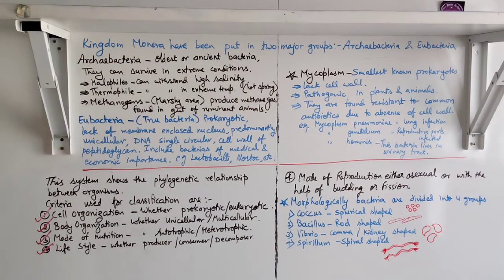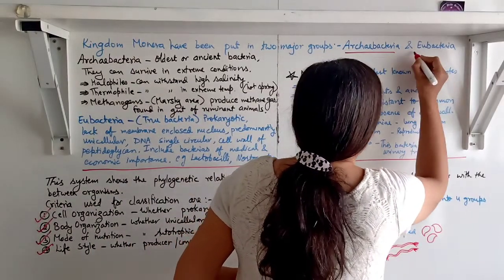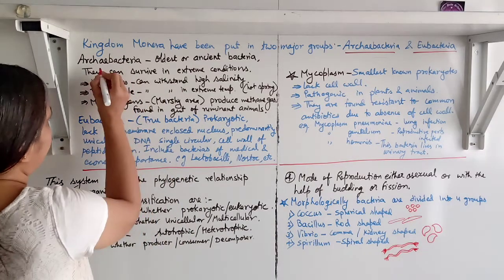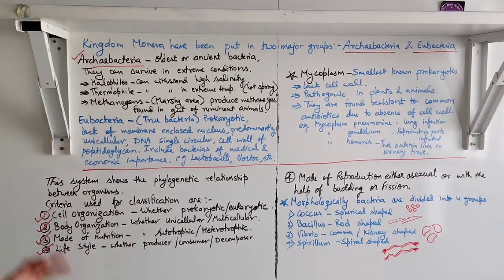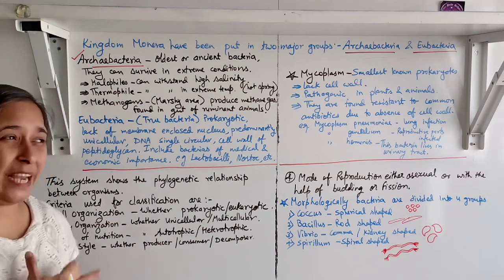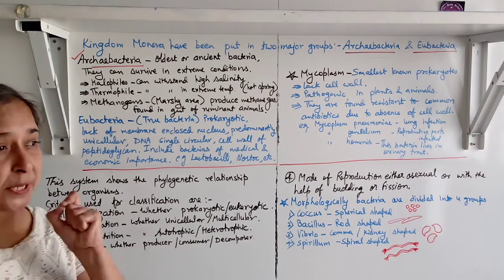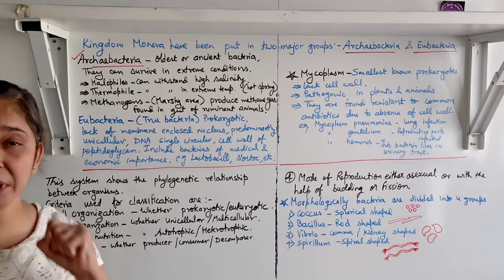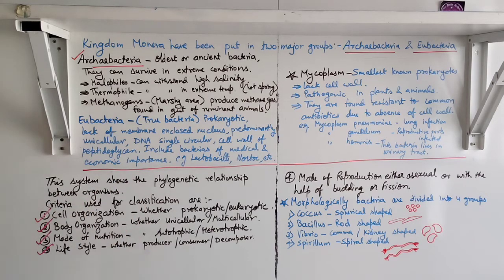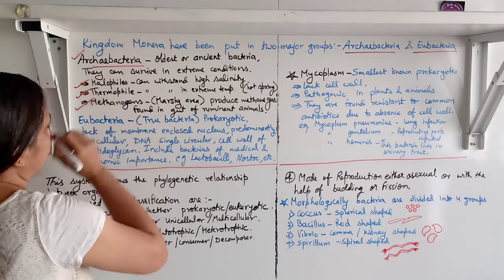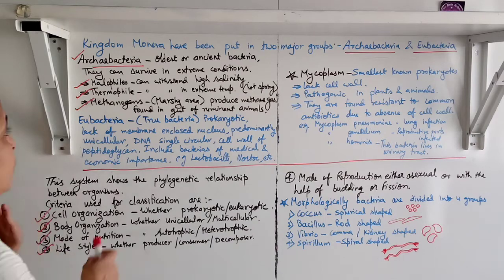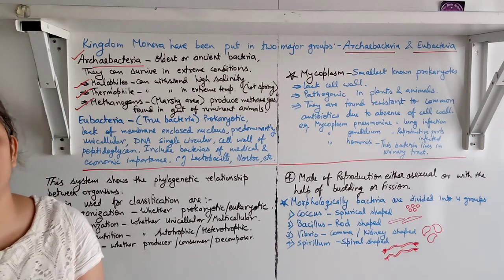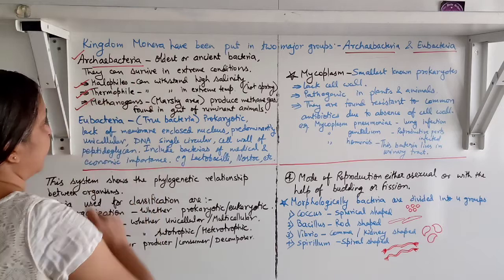Kingdom Monera is divided into two major groups: Archaebacteria and Eubacteria. Archaebacteria are the oldest or ancient bacteria, and their main peculiar characteristic is that they survive in extreme conditions. Examples include halophiles, which can withstand high salinity, thermophiles, which can withstand extreme temperatures such as in hot springs.